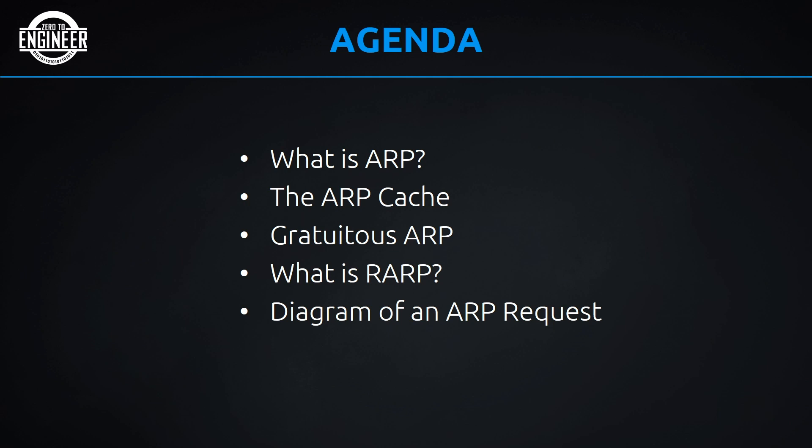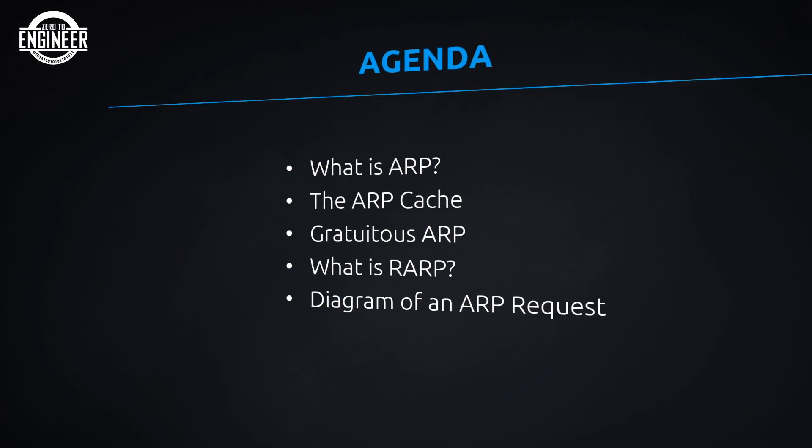Let's look at our agenda. We'll start by discussing what ARP is and what the acronym means — it's Address Resolution Protocol. Then we'll move on to the ARP cache, also called the ARP table. Then we'll discuss Gratuitous ARP, followed by RARP, or Reverse Address Resolution Protocol, and why it's no longer relevant. Finally, we'll look at a diagram showing exactly what happens in an ARP request.